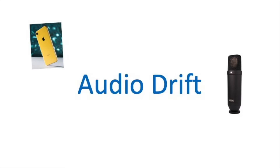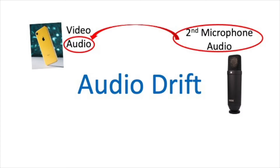What is audio drift? Audio drift occurs when you are shooting a video with your camera and also recording the audio with a second microphone. And when you replace your camera audio with the audio from the second microphone, you'll notice at the beginning of your video the audio and video will be in sync. However, as the video plays, the audio and video begin to drift apart and be more and more out of sync. And this is what is commonly known as audio drift.